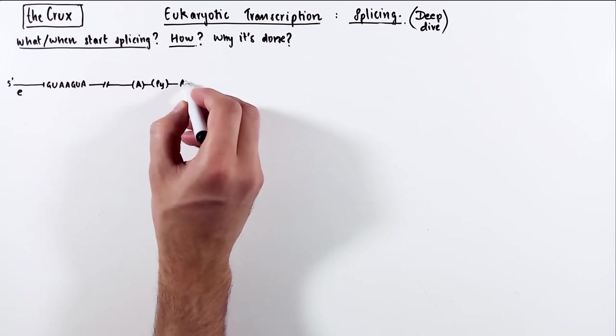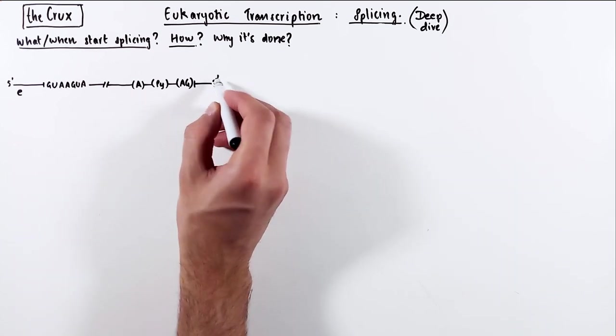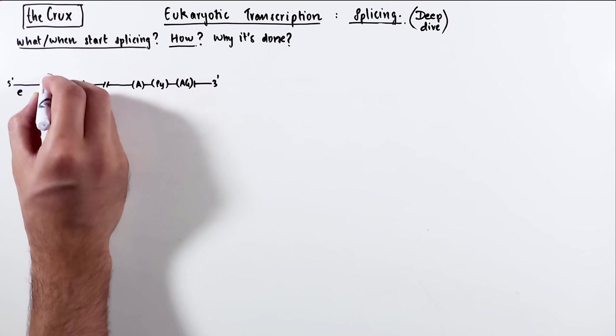containing the GU and a short stretch of AAGU consensus next to it. And towards the end of the intron, we have the branch point, a pyrimidine stretch, and AG, which is the 3' splice site.